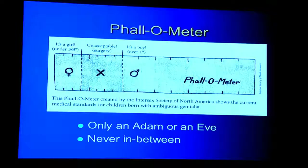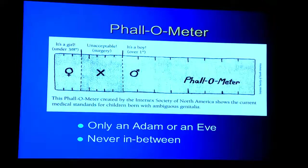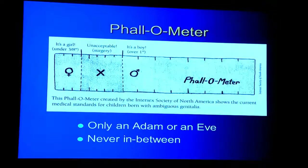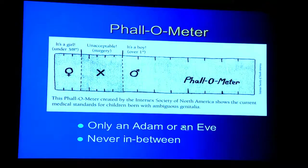This phallometer was designed by an intersex group to show how John Money's theory played out in medical practice. A baby boy's penis could never be too big, but if it was smaller than an inch, they'd hack it off and raise the child as a girl. A clitoris could never be too small, but if too big, they'd cut it off with its nerve endings — that would make you an Eve. You had to be an Adam or an Eve — able to penetrate or be penetrated. You could never be something in between, or both, or neither.